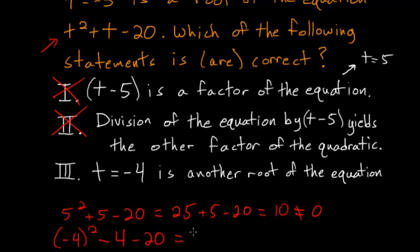Minus 4 squared is 16. Minus 4, minus 20. 16 minus 4 is 12. 12 minus 20 is negative 8. And since negative 8 is not 0, we know that negative 4 is not a root of the equation. So number 3 is wrong as well. So our final answer is that none of these statements are correct.